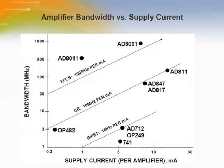High speed analog signal processing applications, such as video and communications, require op-amps which have wide bandwidth, fast settling time, low distortion and noise, high output current, good DC performance, and will operate at low supply voltages. These devices are widely used as gain blocks, cable drivers, ADC preamps, current to voltage converters, etc.